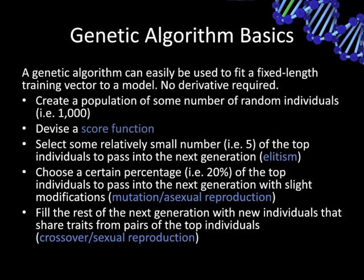Now let's talk about the basics of a genetic algorithm. We're simply adjusting that training vector. The first step is to create some number of random individuals — say a thousand — which are just random training vectors. Devise a score function to score each of these vectors. Then select a small number — for example five — of the top individuals to pass directly to the next generation; this is called elitism. Then choose a percentage — maybe 20% — of top individuals to pass to the next generation with slight modifications; this is mutation. Fill the rest of the next generation with individuals that share traits from pairs in the general population, giving precedence to the top-scoring ones.